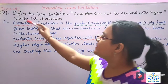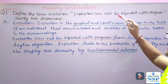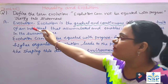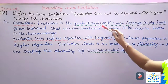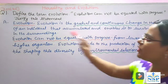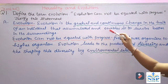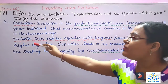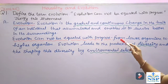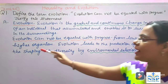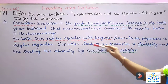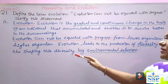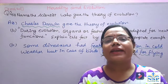Question No. 1: Define the term Evolution. Evolution cannot be equated with progress — justify this statement. Evolution is the gradual and continuous change in the traits of an individual that accumulated and enabled it to survive better in its surroundings. Evolution cannot be equated with progress from lower organism to higher organism; it leads to the production of diversity and the shaping of this diversity by environmental selection.